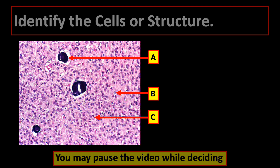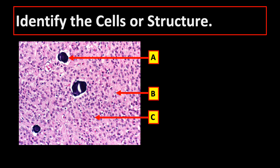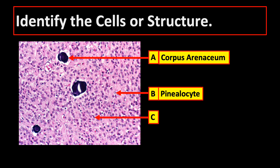Let's try to identify some structures. Identify the cells or pointed structures. If you answer corpus arenaceum or corpora arenacea for A, pinealocyte for B, and astrocyte for C, then you get everything right. And that's the end of our lecture.